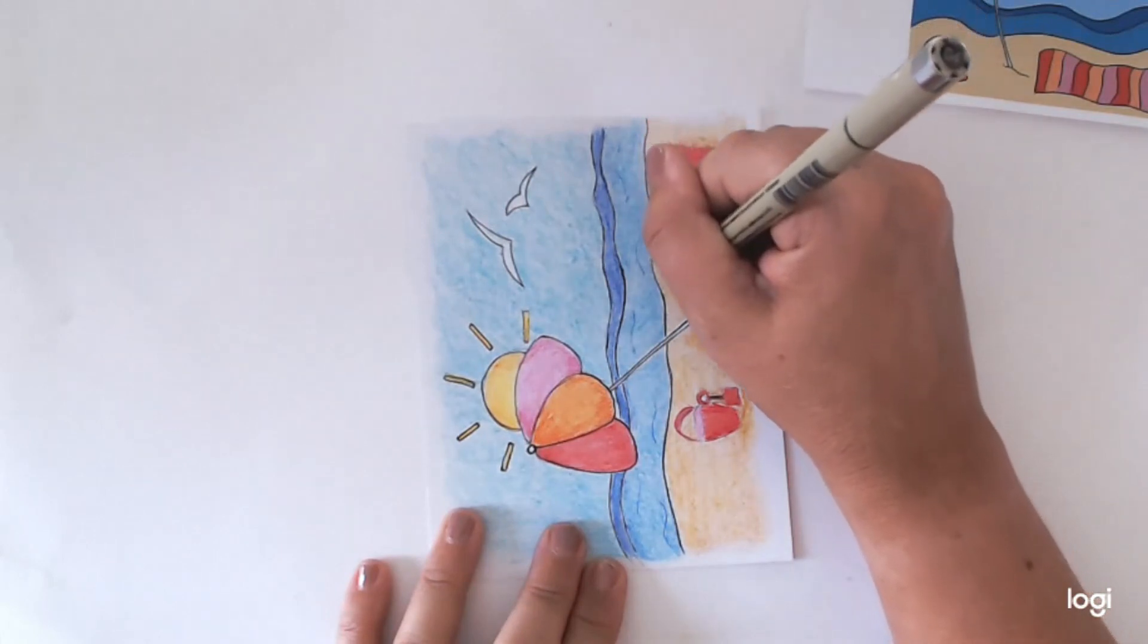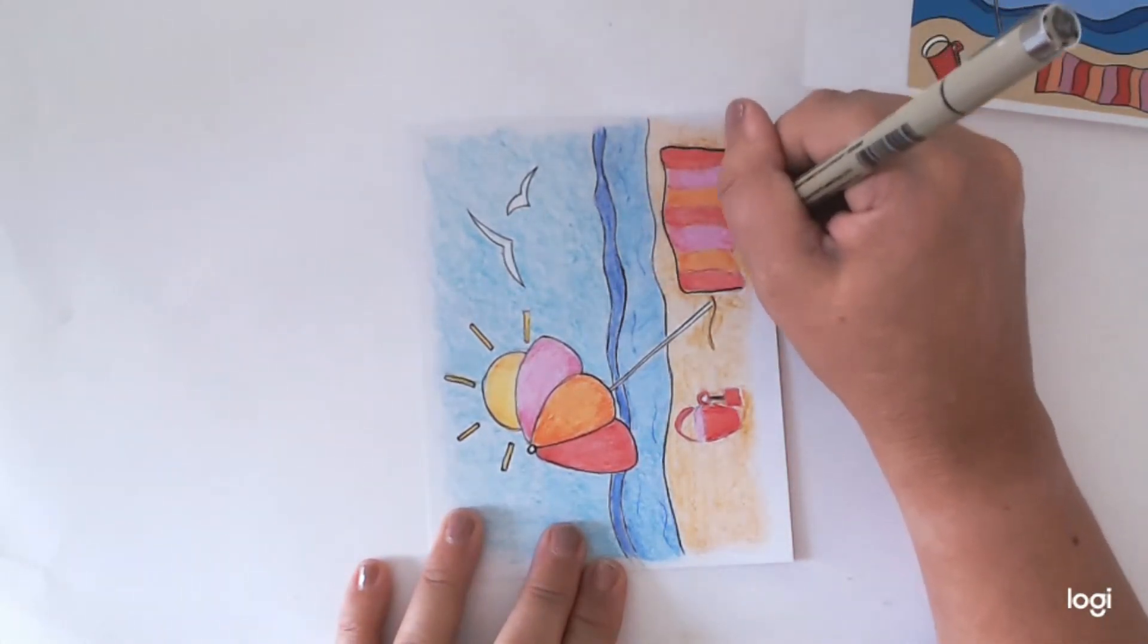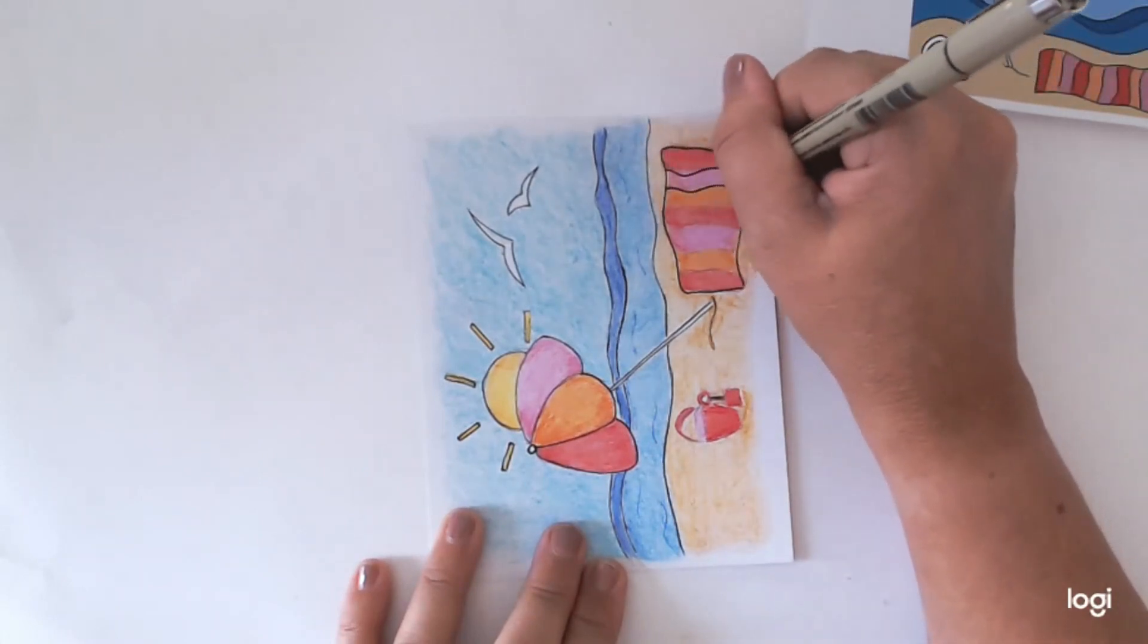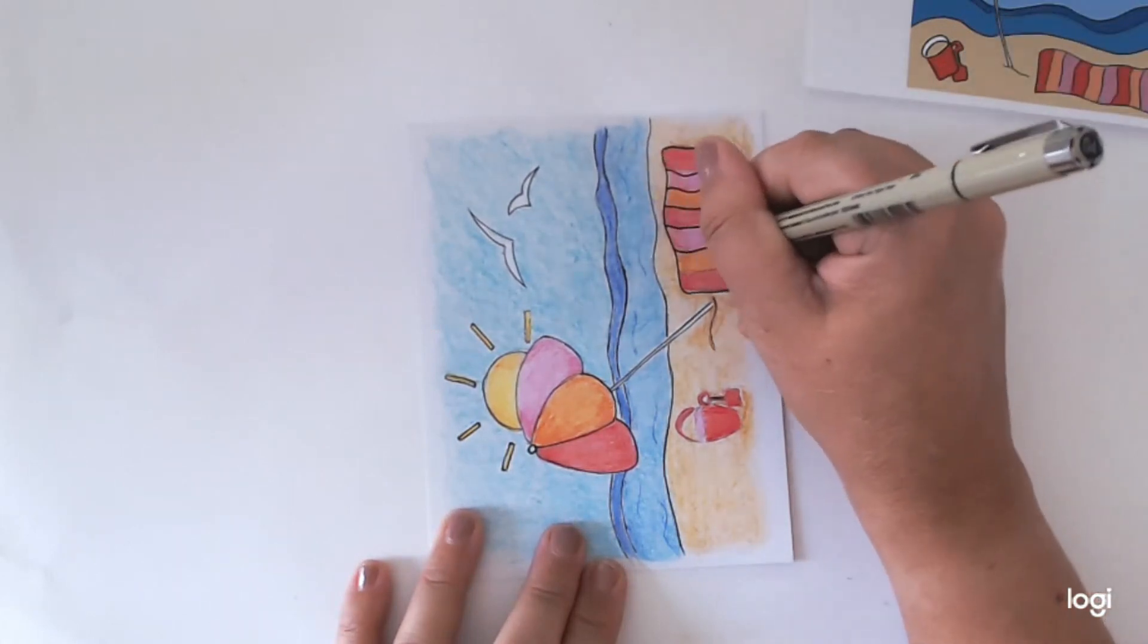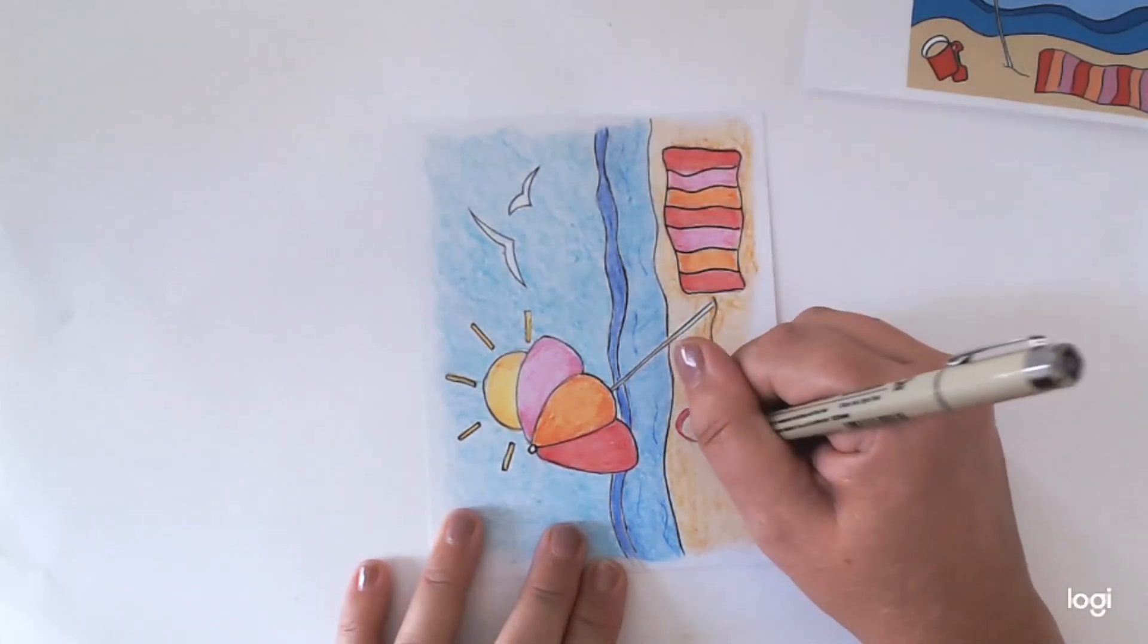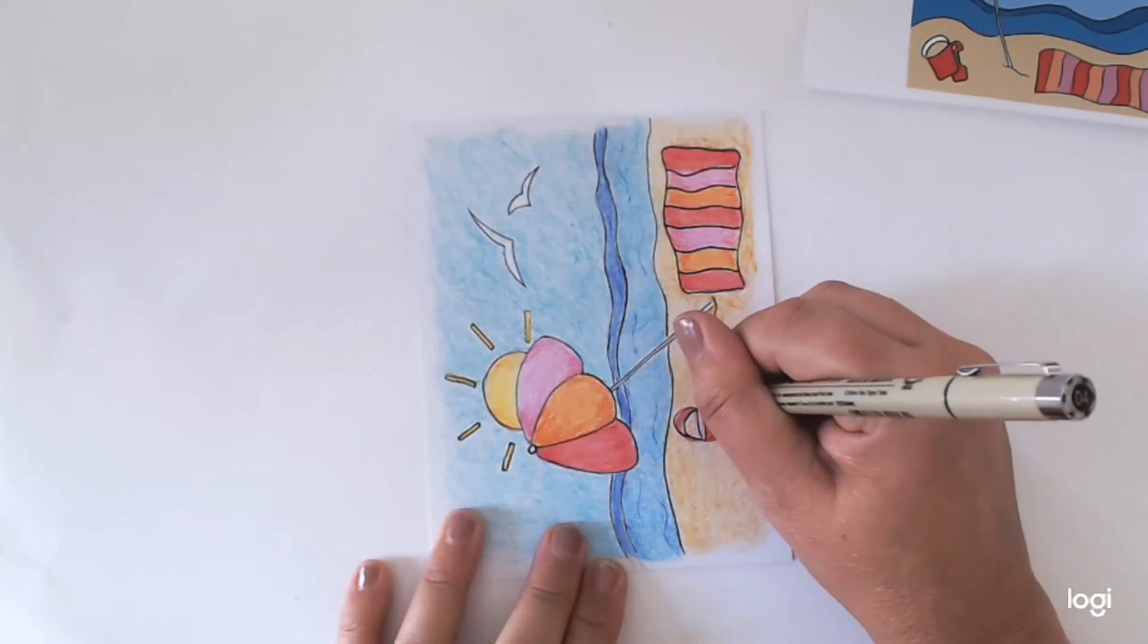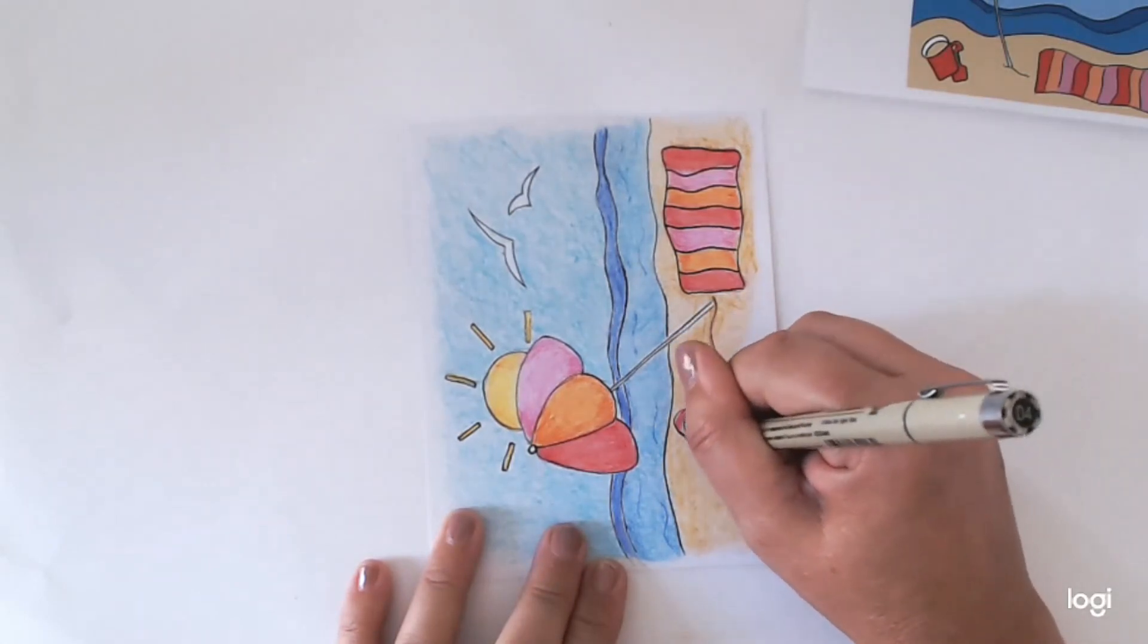Nearly there. Towel and bucket and then we're pretty much done. Don't forget to do the stripes and wiggly stripes on your blanket or towel or whatever it is. Let me know what yours looks like, especially if you've changed the colors. I hope you enjoyed that.